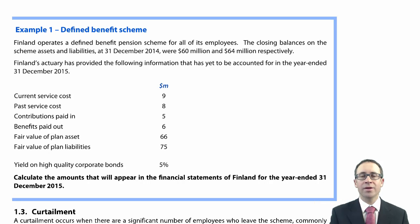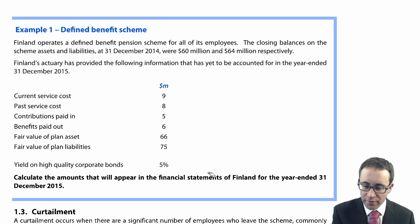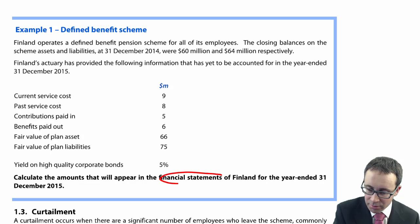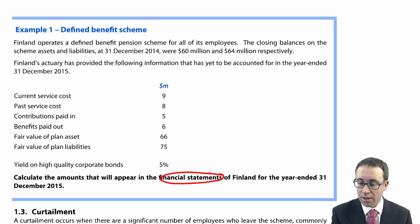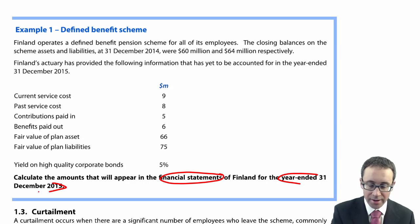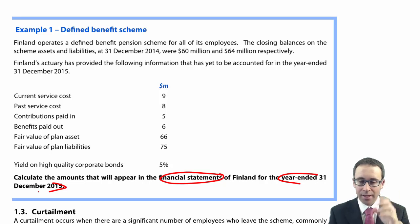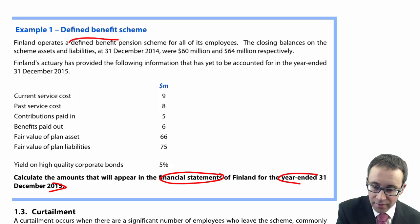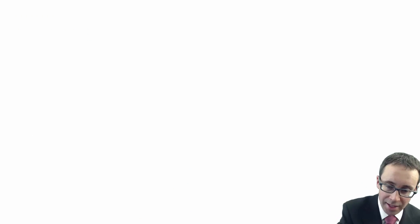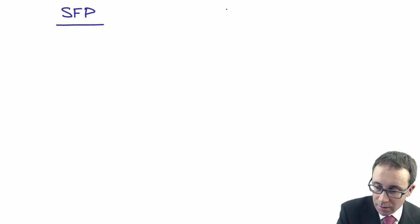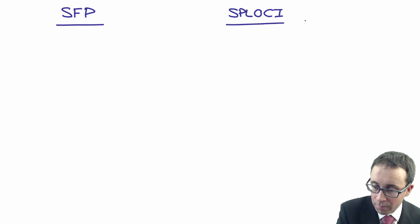Let's pull it together with a numerical example to help understand what's happening with your defined benefit scheme. This example is more likely to be used by the examiner within question number one in group accounts — the parent has a defined benefit scheme and you need to account for it in the parent's books. The question asks for the amounts to appear in the financial statements — the statement of financial position and the statement of profit or loss of Finland, for the year ended December 2015.